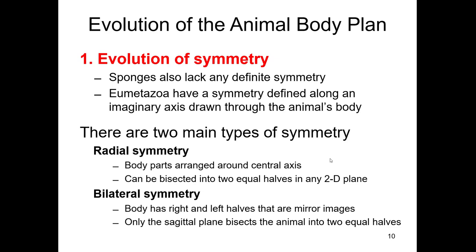The other branch — the Eumetazoa — all have symmetry. There are really two types of symmetry that the Eumetazoans have. One is called radial symmetry. Radial symmetry is the symmetry of a bicycle wheel or a pizza. There's a central point, a circular organization, and you can cut the organism in half in virtually an infinite number of cuts and still create two equal mirror image halves. Radial symmetry is actually fairly rare in the animal kingdom.